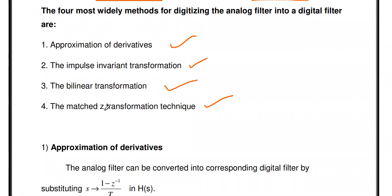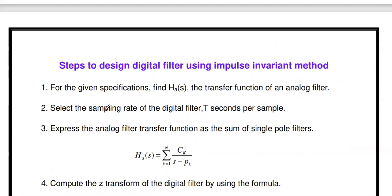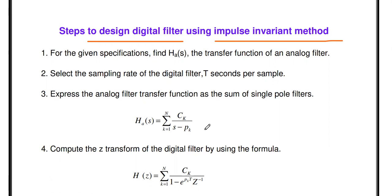All four methods must satisfy these two properties — that is the effective way of designing the digital IIR filter from analog filter. In this video we are going to discuss the impulse invariant method and solve a related problem. In the next videos we will see the other methods.